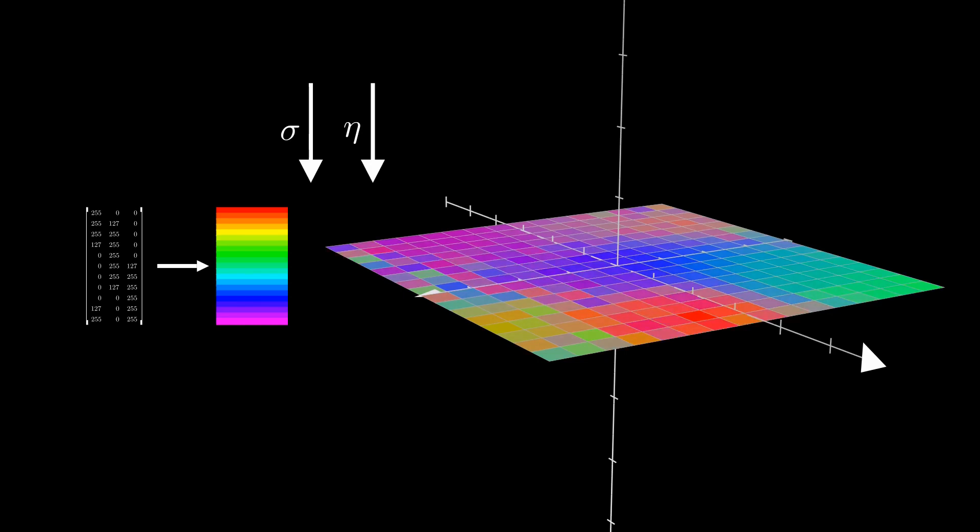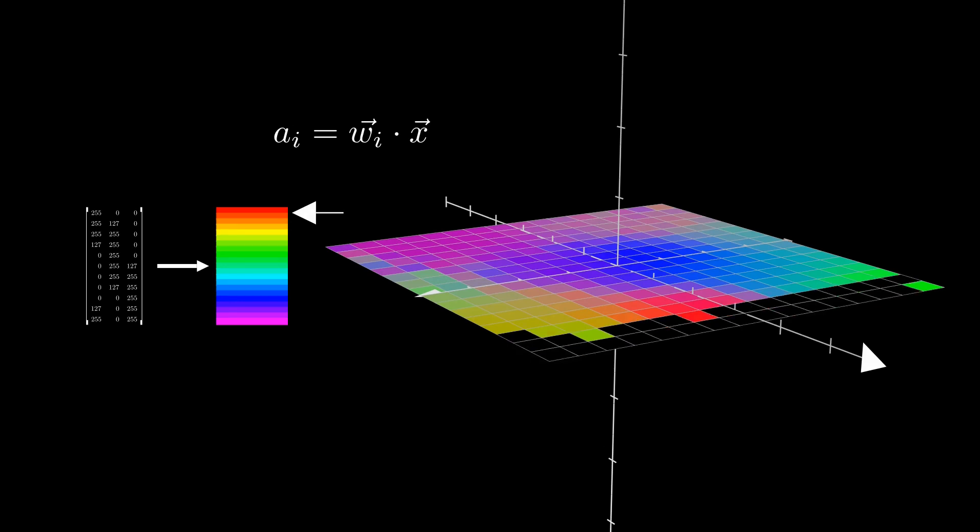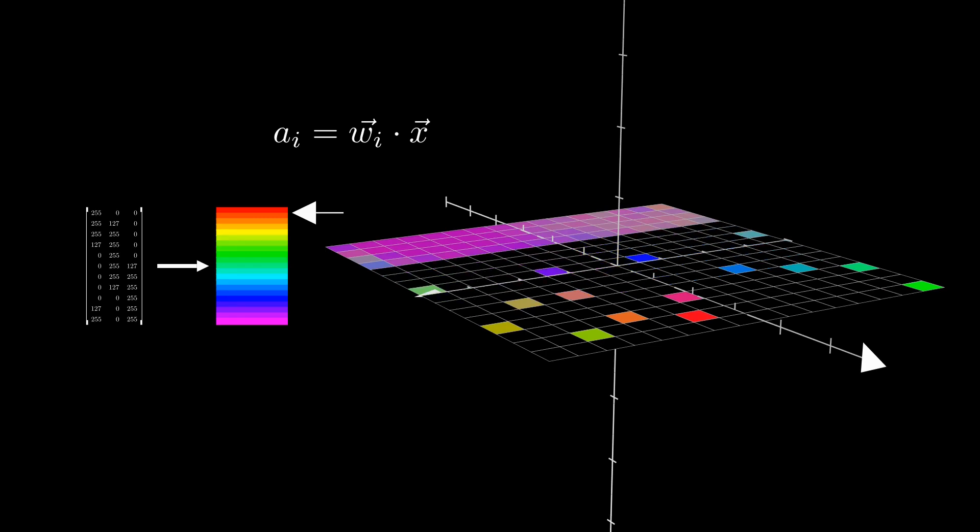As the training progresses, different regions of the SOM learn to respond to different colors. Then, after the training is done, each input sample is passed to the SOM again, and the winning node for each input training sample is displayed with its color. The rest of the nodes are turned black.